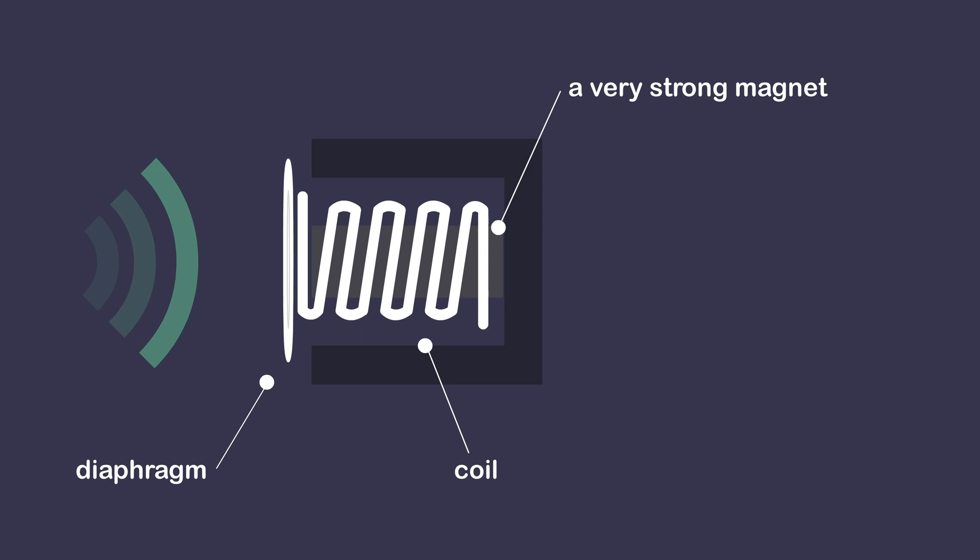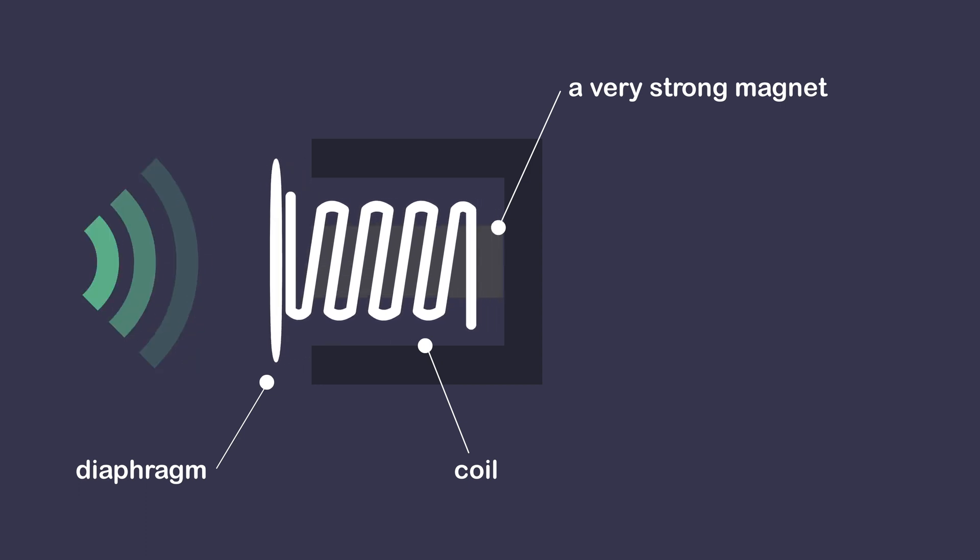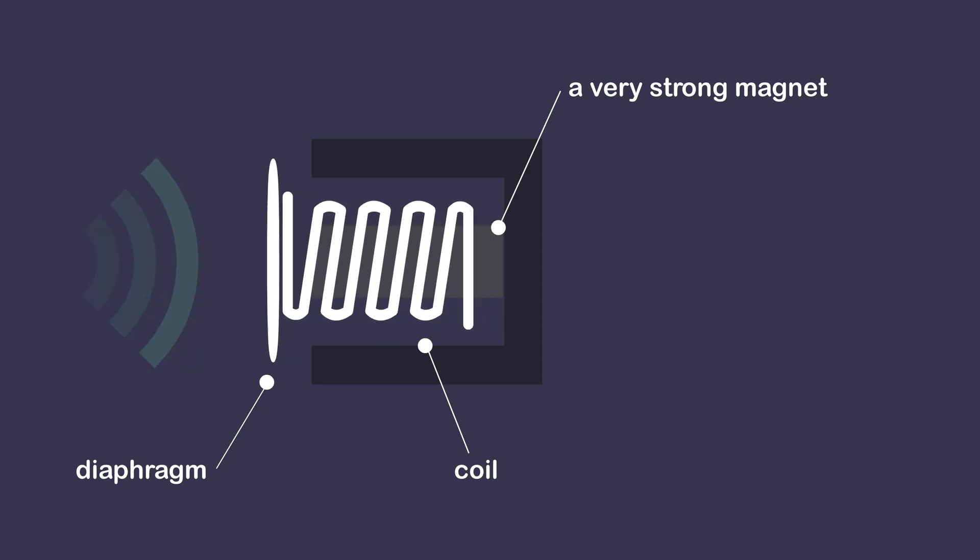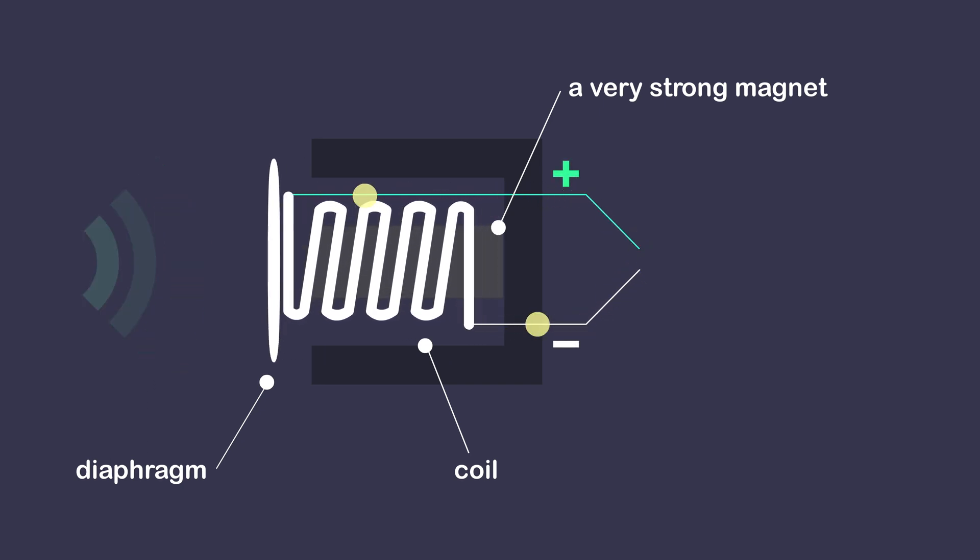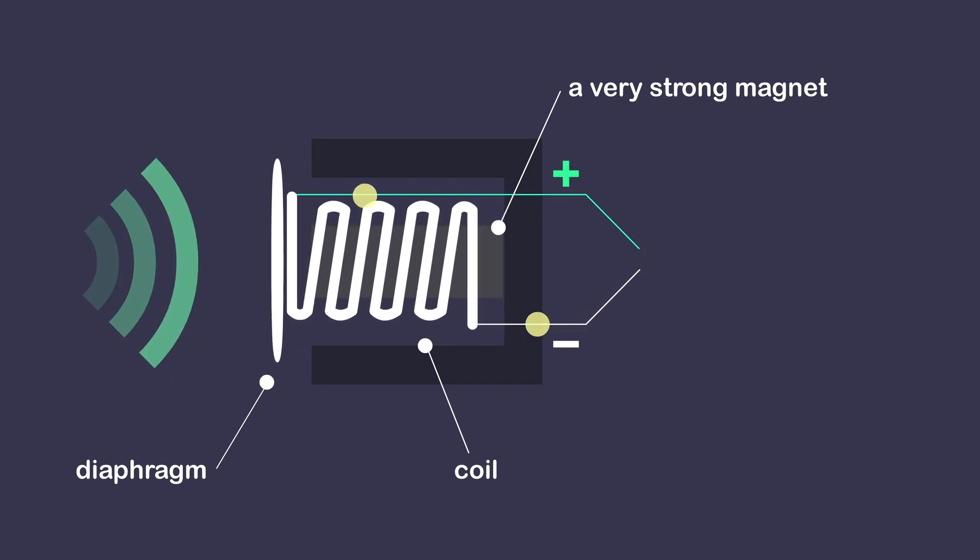As sound waves hit the diaphragm, the diaphragm and the coil start moving rapidly inside this magnetic field. As a result, an electric current will start flowing in the circuit, and this is what we call electromagnetic induction.